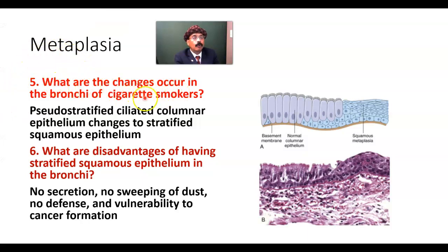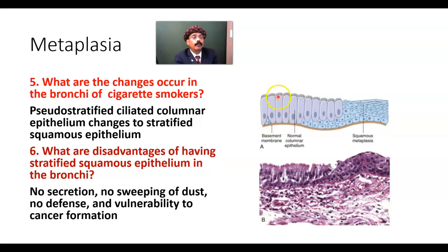What are the changes that occur in the bronchial tree of a cigarette smoker? In the bronchial tree of a cigarette smoker, we should have pseudo-stratified ciliated columnar epithelium — these are the cilia. This is a schematic diagram. We have a lot of cells: we have basal cells, some cells may not go to the surface, we have goblet cells that secrete mucus, and we also have diffuse neuroendocrine cells, though they have not been shown here. But they are all present.